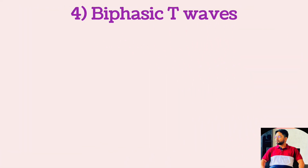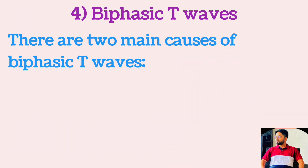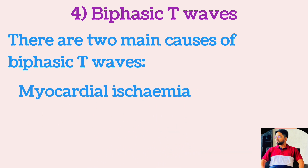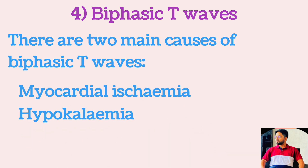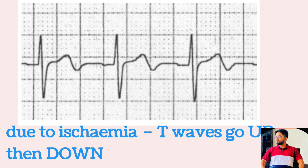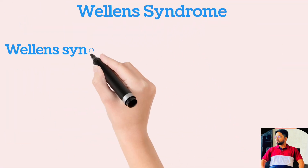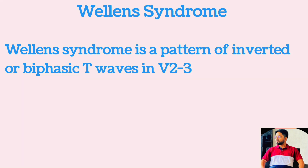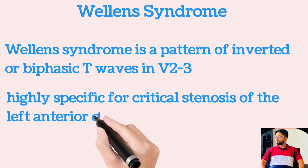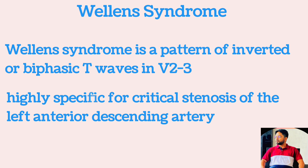Biphasic T-waves have two main causes: myocardial ischemia and hypokalemia. These two waves go in opposite directions. Biphasic T-waves due to ischemia go up then down, while biphasic T-waves due to hypokalemia go down then up. Wellens syndrome is a pattern of inverted or biphasic T-waves in V2 and V3 that is highly specific for critical stenosis of the left anterior descending artery.